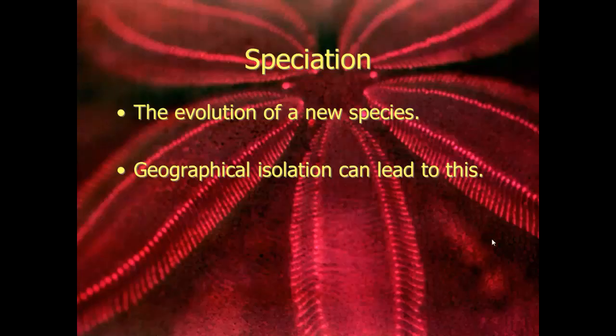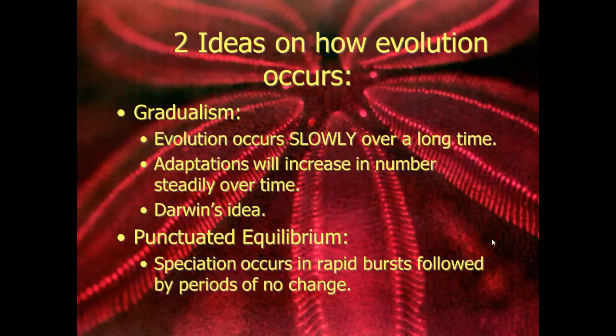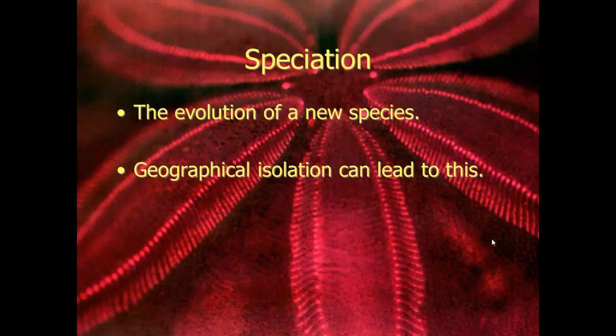Speciation is just the evolution of a new species, and it can happen because of disruptive selection or geographical isolation. Geographical isolation means something like a river or a mountain range separates a population — say salamanders on one side from salamanders on another. Eventually they become two different species because the genes on one side of the mountain are isolated and aren't mixing with the population on the other side.